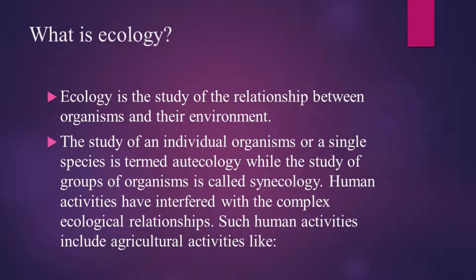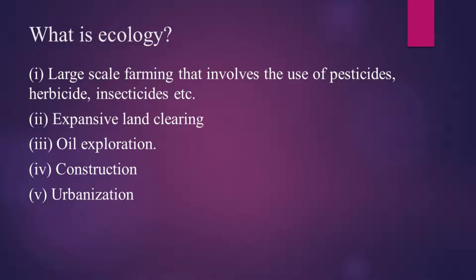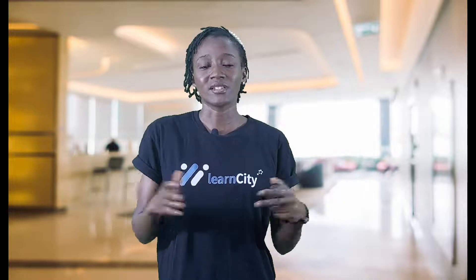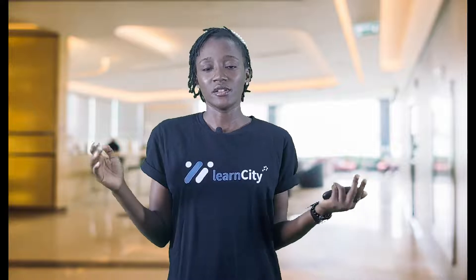Human activities have interfered with the complex ecological relationships. One of these human activities is large-scale farming. When you want to clear the land, you would have to use a bulldozer — bringing a big tractor to the farm to clear the land extensively. This process of bringing machines to the farm and clearing the land is interfering with organisms and their environment. Other such activities include oil exploration, construction, and urbanization.